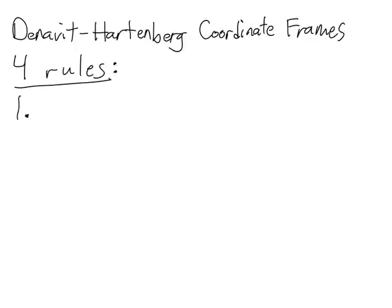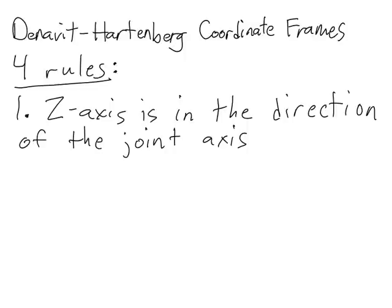The first rule is one we have seen before as a rule of thumb for defining coordinate frames. Here, in the Denavit-Hartenberg method, it's no longer simply a rule of thumb — it's a rule that must be followed. That rule is that the z-axis must always be in the direction of the joint axis. That means that if you have a revolute joint, as shown here, the z-axis is the axis of rotation. So the rotation moves around in this direction, and the z-axis is up, as shown here.